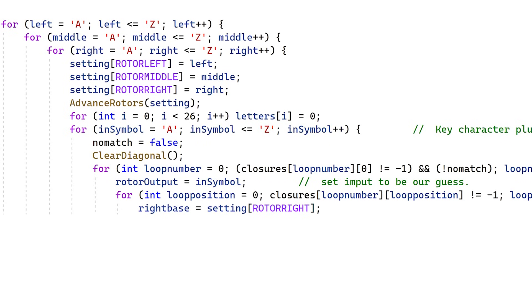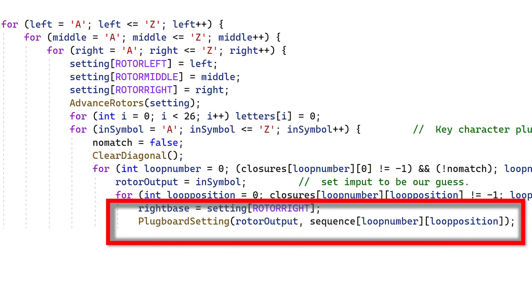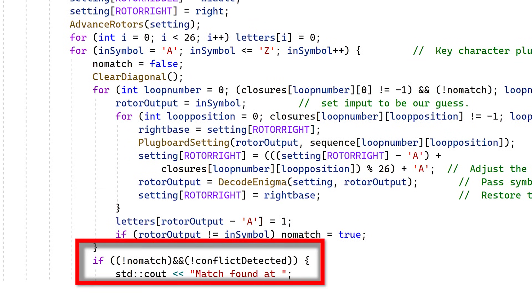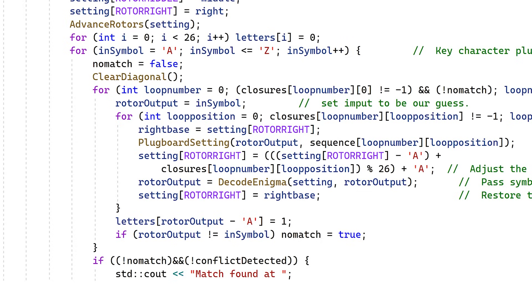Then, for each input to the rotor, we try to generate a mapping between the character being tested, and the mapping we know it should have based on the data from our menu. Finally, to print the output solution, we have to check that all the start and end letters matched, and we also need to check that no plugboard conflicts were detected. That's pretty much it.